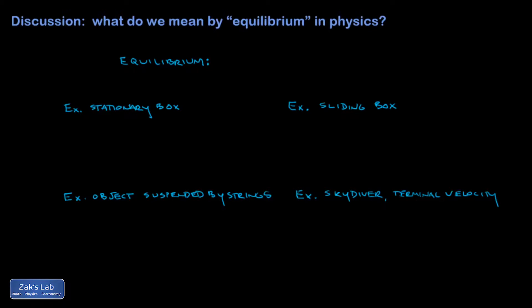Here's just a quick discussion on what we mean by the word equilibrium in a physics course. So part of it might be a little surprising. So equilibrium means we're looking at a system or a particle with constant velocity.